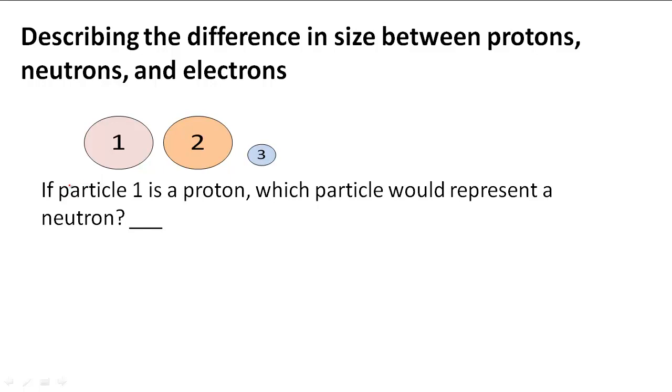In this example problem we have a diagram and it says if particle 1 is a proton, so this particle is a proton, which particle would represent a neutron?